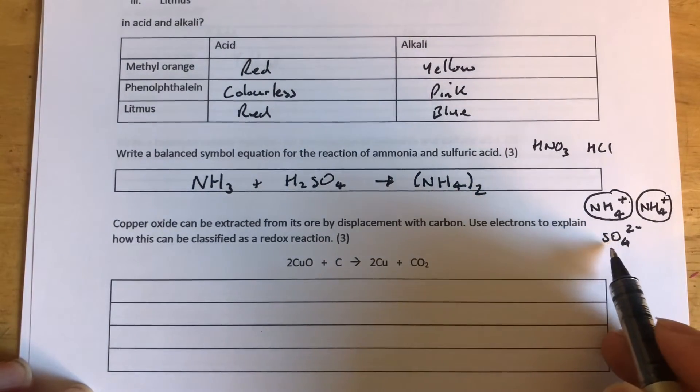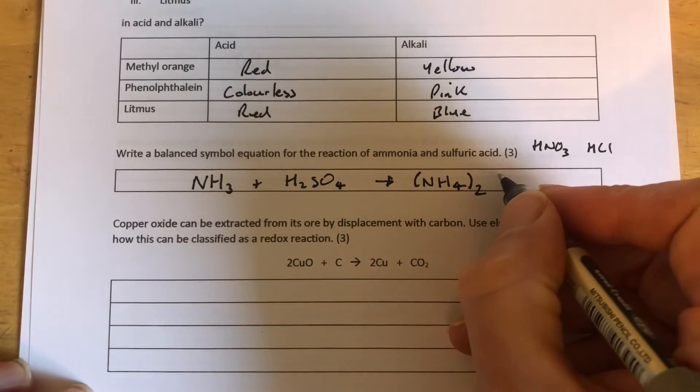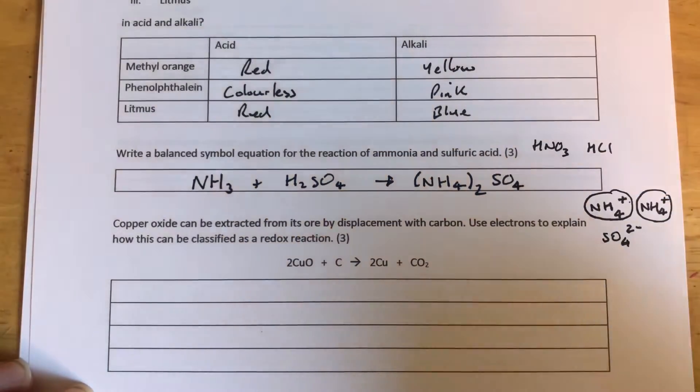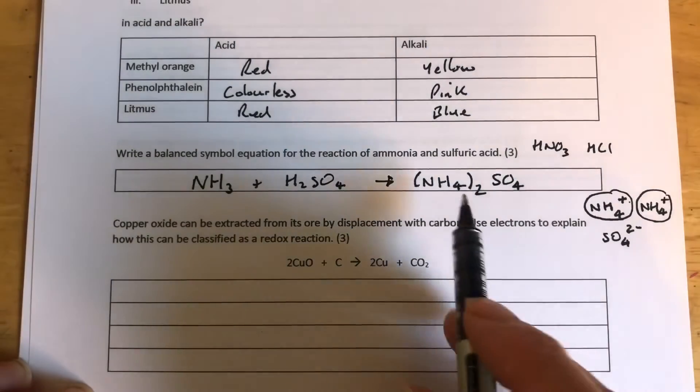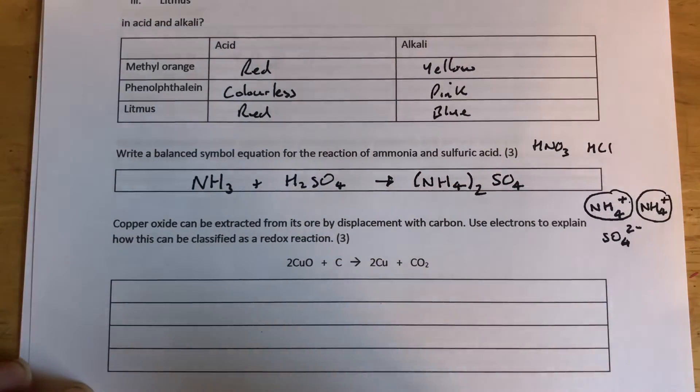Sulfate, just the one sulfate. Even though it's an ion made of more than one atom, it's only one of them, so we don't need brackets. We're just going to write SO4. And there, we can have a mark if we've written that.